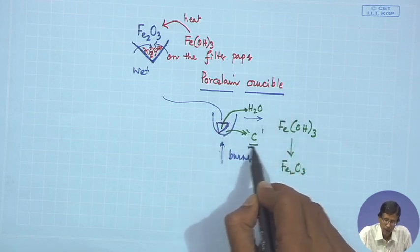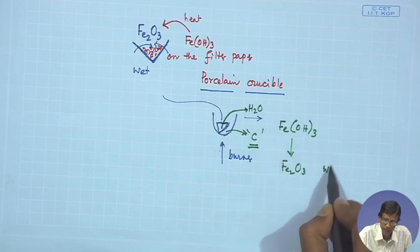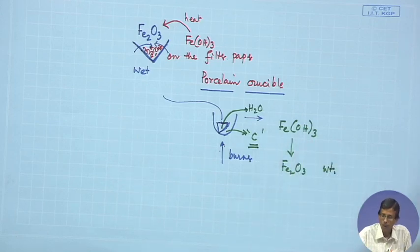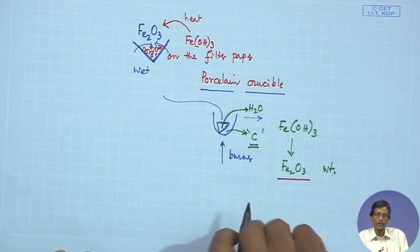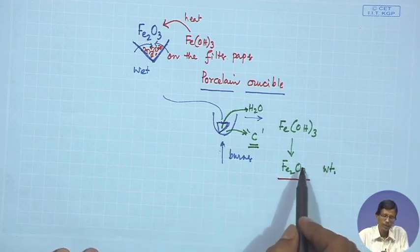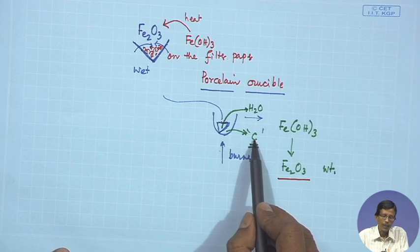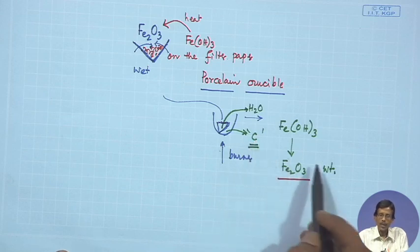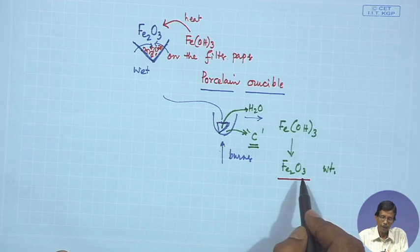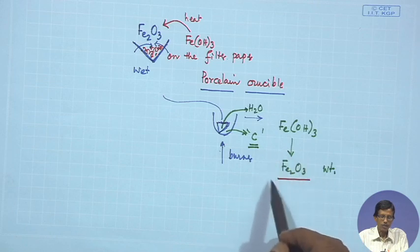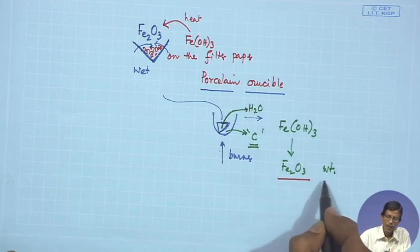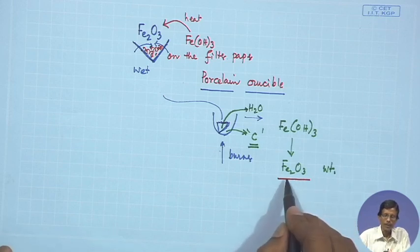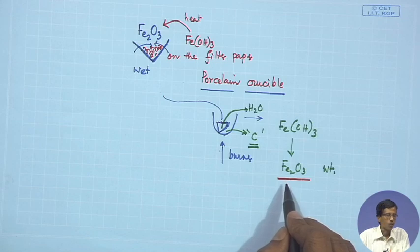All carbon particles forming as ash from burning the filter paper should be removed because carbon can also contribute to the weight. In the final stage, we are looking only for the weight of pure Fe₂O₃ — no trapped water, no extraneous matter, no carbon particle from the filter paper. This will take several hours sometimes, but by knowing the weight of Fe₂O₃ we can estimate the amount of Fe³⁺ originally present.